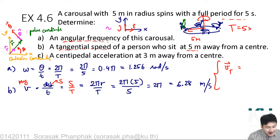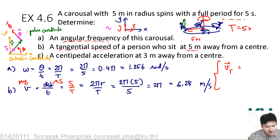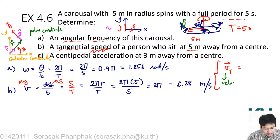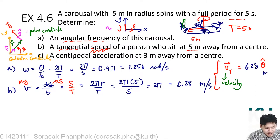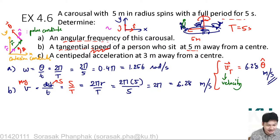This is similar to having i and j pointing toward x and y directions in Cartesian coordinates. To represent vt as a vector, if the question asks about tangential velocity, your answer is 6.28 theta-hat meters per second. You write it this way when the question asks about velocity, not just speed.